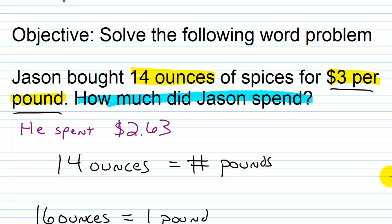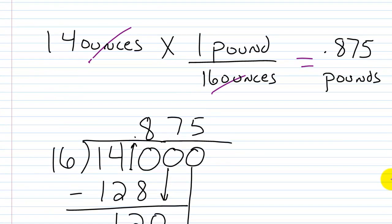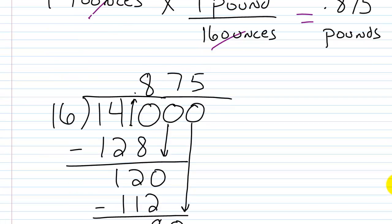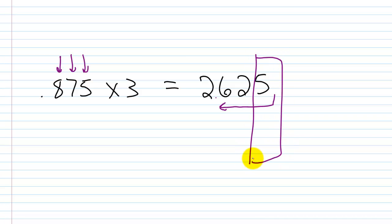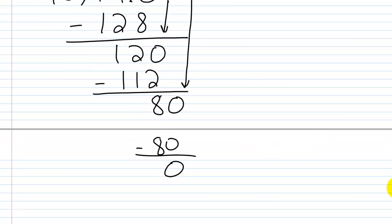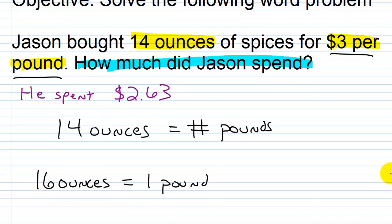To check: Jason bought 14 ounces of spices for $3 per pound. First we convert 14 ounces into an equivalent amount of pounds — 14 ounces equals 0.875 pounds. Then we multiply by 3: 0.875 times 3 is 2.625. Because we're dealing with a real-world application, you can't spend $2.62 and a half cent, so we round it up and say $2.63. He spent $2.63.